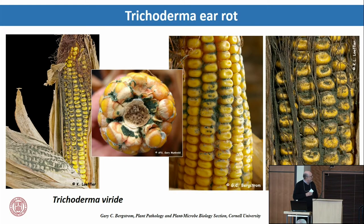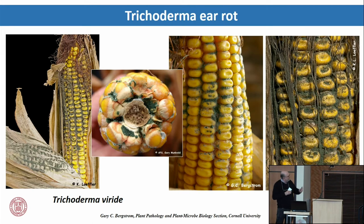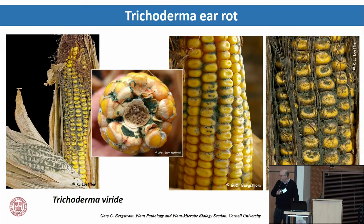Another one I've seen quite prevalent in my area is Trichoderma ear rot — a bright bluish-green color — seen particularly with ears damaged by birds, allowing entrance of the molds into the ear.